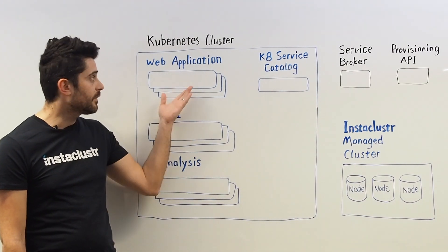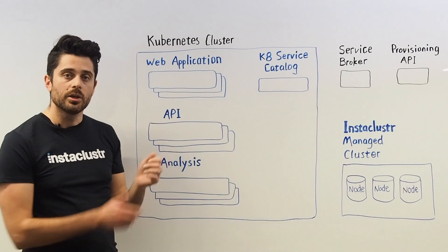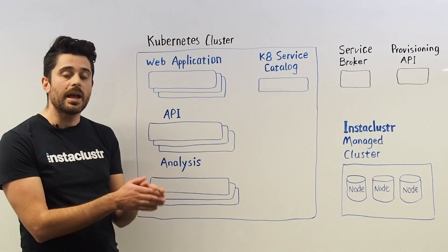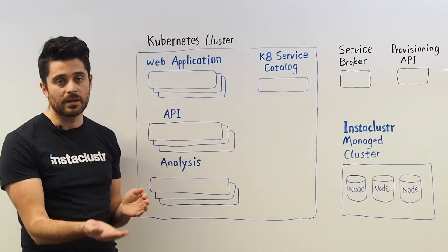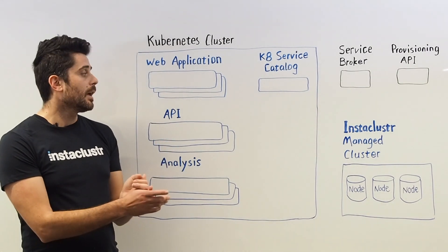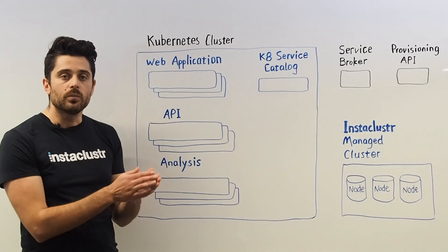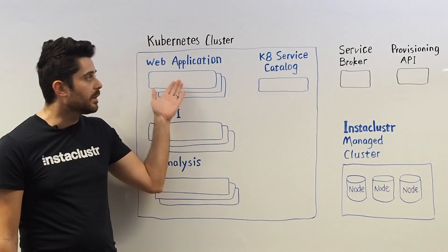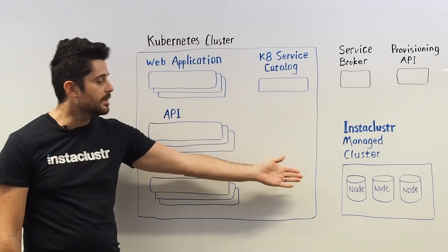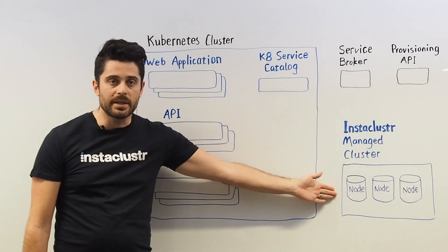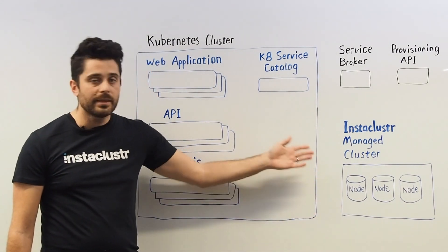Now let's take for example your web application. You want it to run and talk to your Apache Kafka cluster. Traditionally what would happen is we would have to manually configure the pod definition to connect to these nodes on the outside of the Kubernetes cluster.